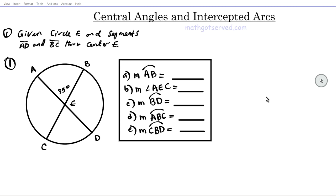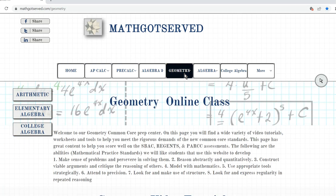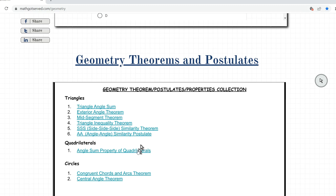This is the multi-part problem we're going to be working on. Given circle E, with segments AD and BC through the center E, we need to find the given measures A through E. To get us started we're going to look at the central angles theorem that's going to guide our problem solving process. We're going to go to our website mathcotserved.com, go to geometry, and scroll down to the theorems and postulates on circles.